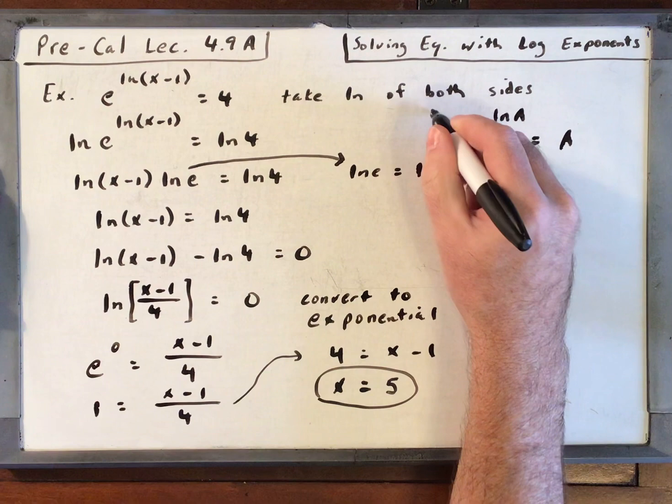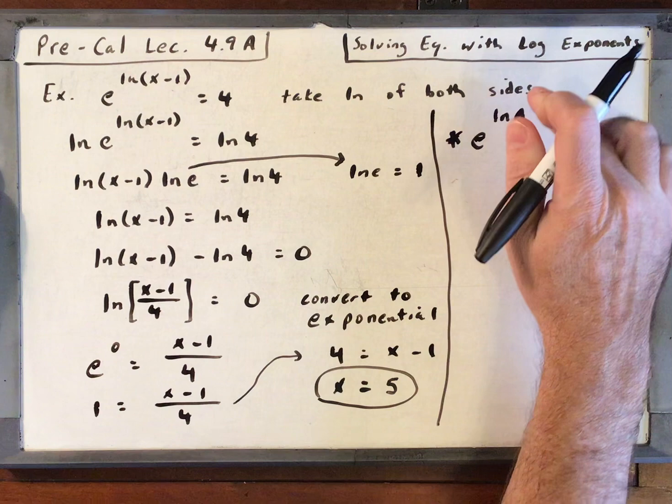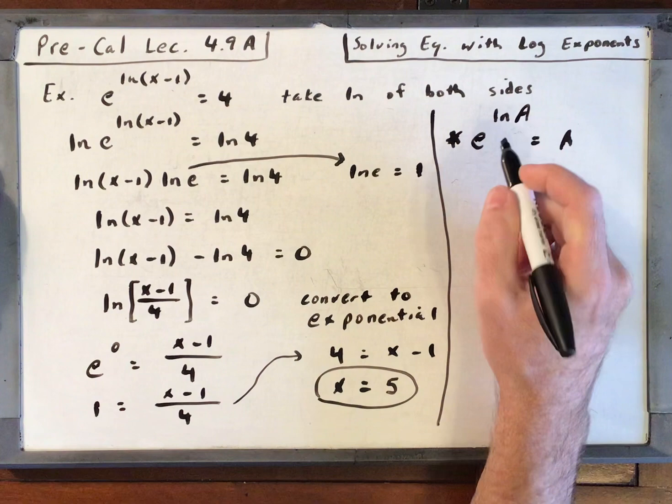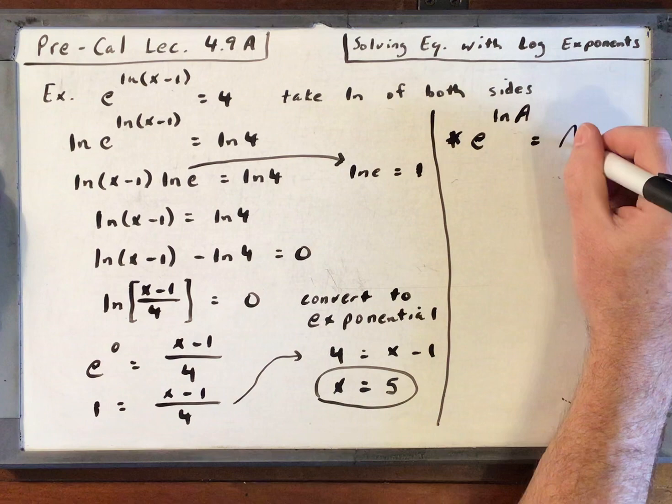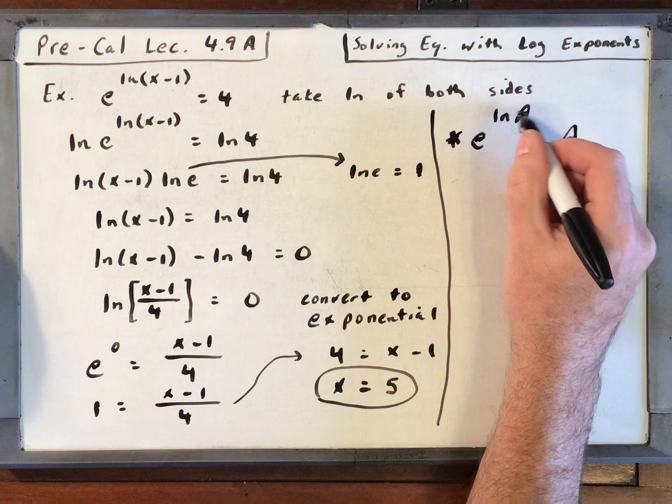So that is a formula worth remembering. e to the natural log of a is equal to a. So whatever you're taking the natural log in, that's equal to that.